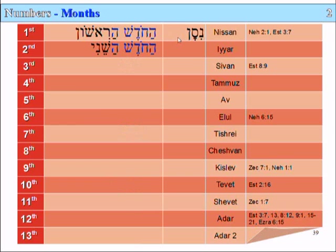The second month is called Ha-Khodesh Ha-Shani, or the month the second — the second month. Ha-Khodesh Ha-Shani. And the Babylonian name is Aiyah.